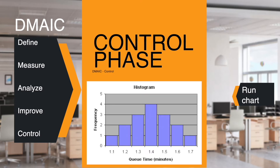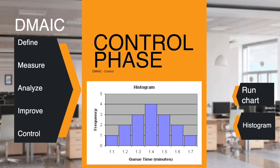A histogram displays the frequency of different measurements and highlights measurements that are considered outliers from the rest. It is useful to identify special cause variation.